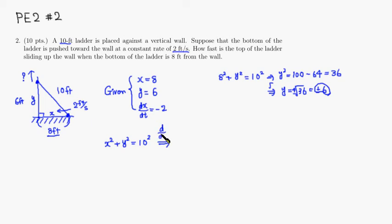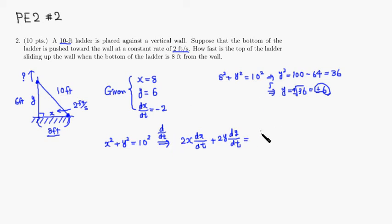So let's take the derivative of both sides of the equation with respect to time t. You will get: derivative of X squared is 2X dx/dt, plus derivative of Y squared is 2Y dy/dt, equals 0, since the derivative of the constant 10 squared is 0. Since everyone seems to have 2 in it, I'm going to divide through by 2, so I can cancel both 2s.